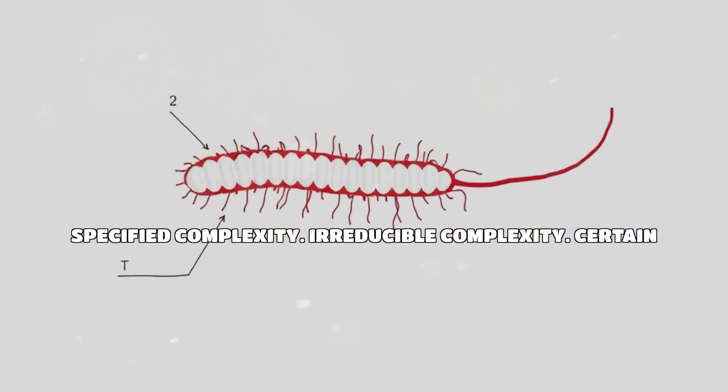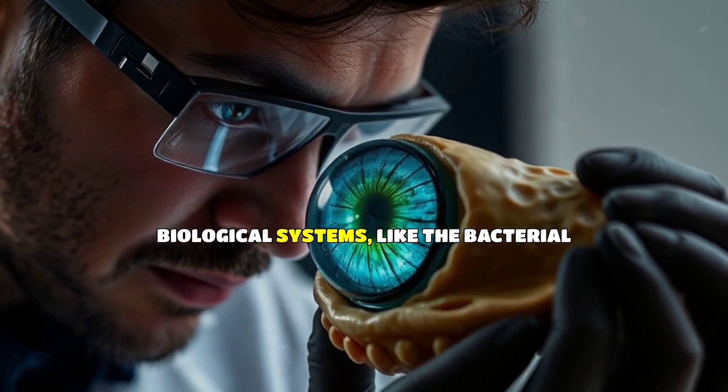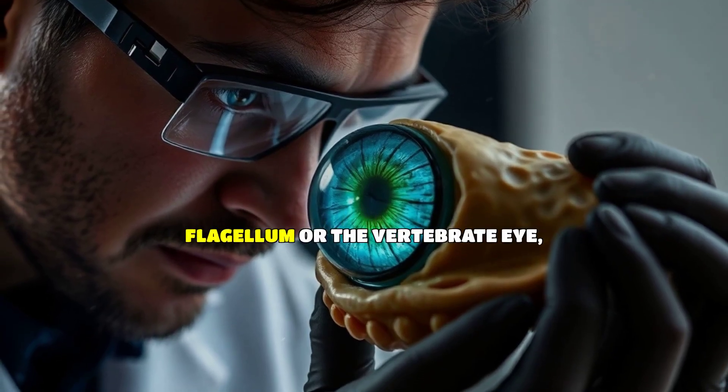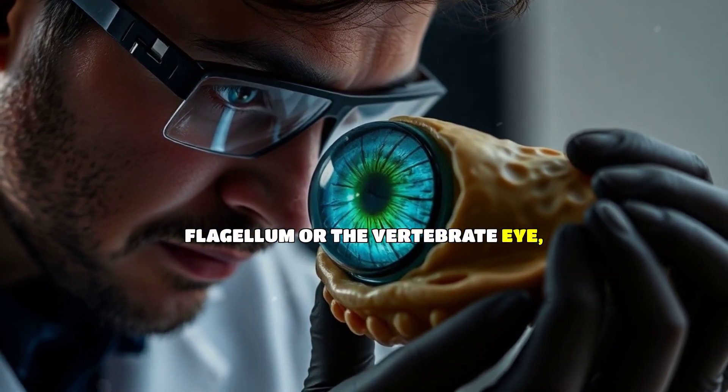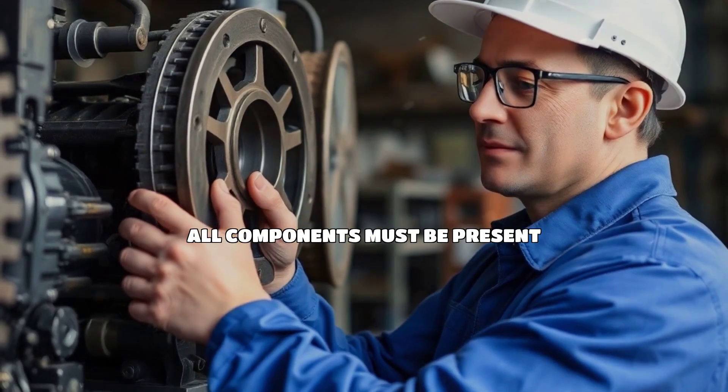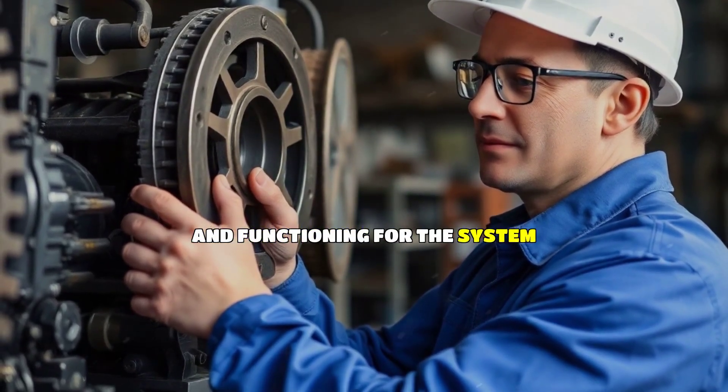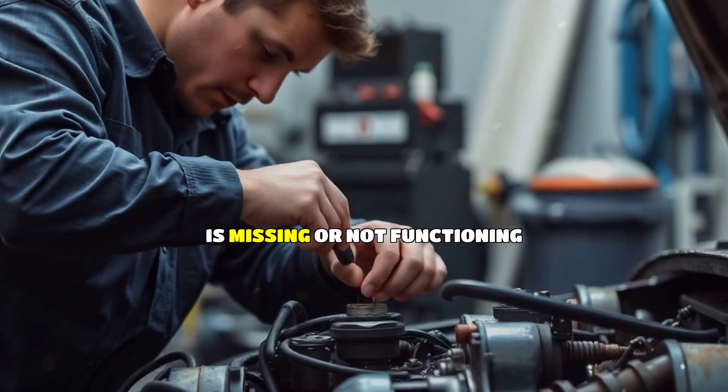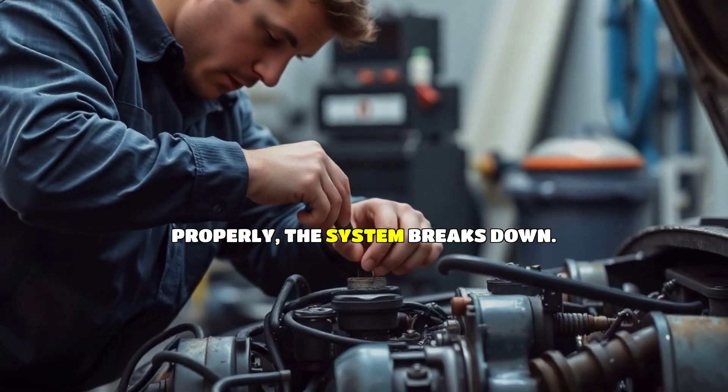Irreducible complexity. Certain biological systems, like the bacterial flagellum or the vertebrate eye, are irreducibly complex, meaning that all components must be present and functioning for the system to work. If any part is missing or not functioning properly, the system breaks down.